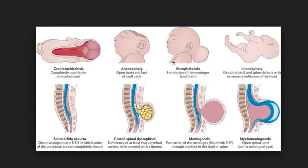Encephalocele is where meningeal and brain tissue coverage is damaged, causing defects of the skull. Then there is spina bifida, which is also related to spina bifida occulta, meningocele, and myelomeningocele — various different stages of spinal malformation.